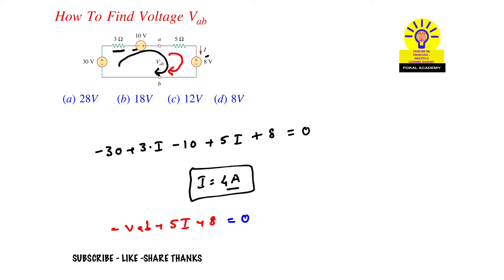Current was we got 4 amperes. Now substitute here, then we get V_AB equal to 5 into I, means 4, plus 8.